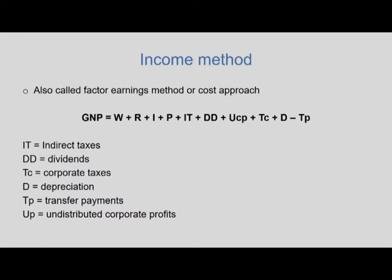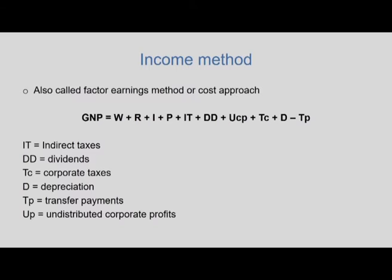The income method is also referred to as the factor earnings method or cost approach. Estimating national income through the income method helps us understand the distributive shares of different factors of production in an economy. In the circular flow model, households supply labor, capital and other resources to the productive sector, and the firms in turn pay wages, salaries, rent, interest and profit. All these sources of income received by the basic factors of production are added to get the national product.